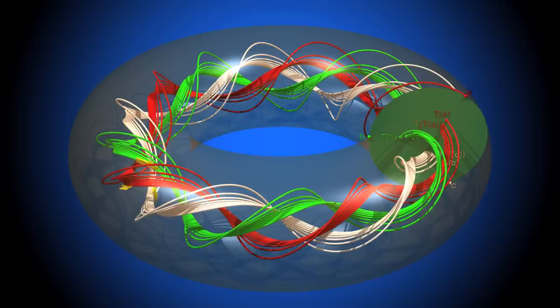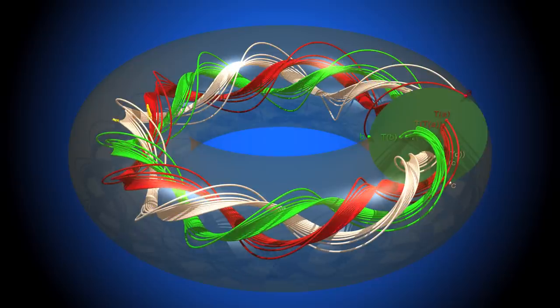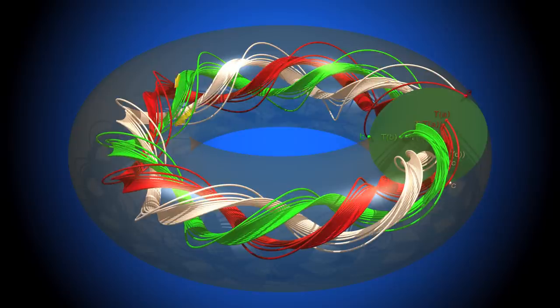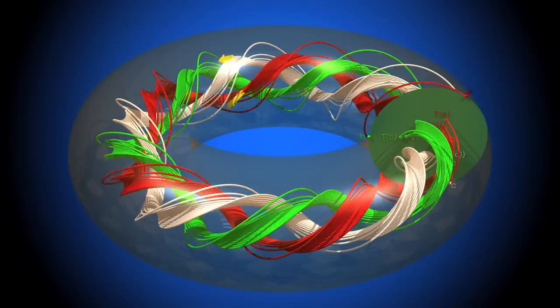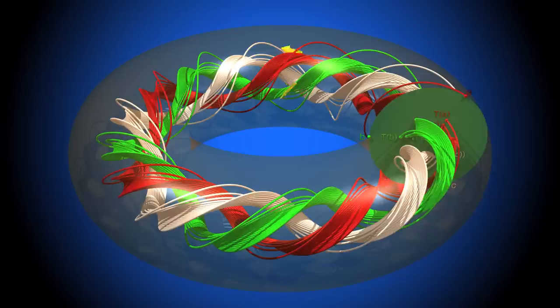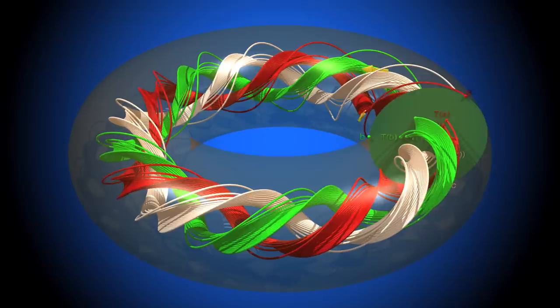We replace the dynamics of the vector field in continuous time by the dynamics of the transformation t in discrete time: zero, one, two, three, and so on. This is often much easier to understand.